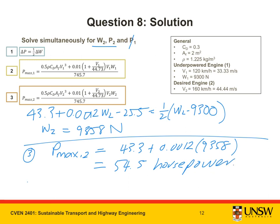Therefore, for the desirable maximum speed, the weight of the car and engine should be 9358 Newtons, and its power must be 54.5 horsepower.